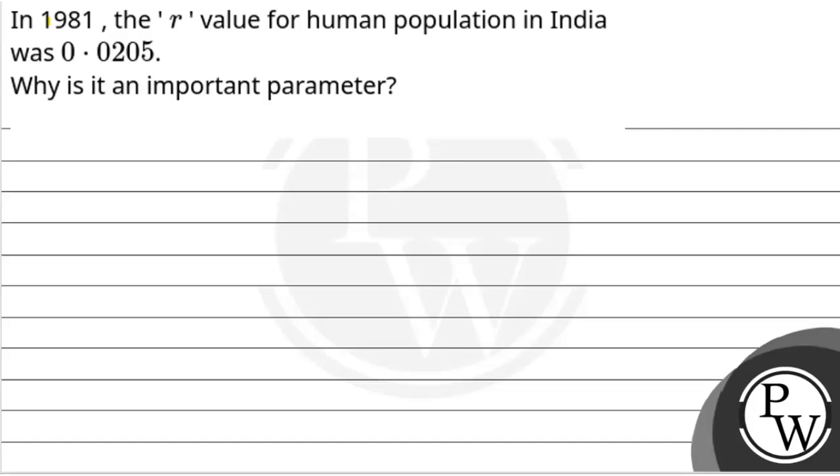Hello, let's read the question. In 1981, the r value for human population in India was 0.0205. Why is it an important parameter?